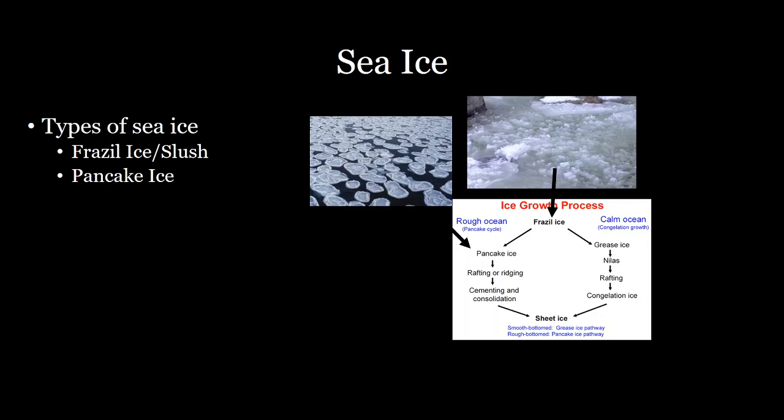In rough oceans, you have the formation of pancake ice — little disk-like formations of ice. As the ice starts to form, the waves break it up into these little disks and you don't have a complete matrix of ice develop.